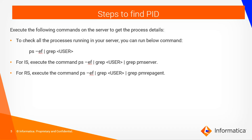These are the steps to find out the PID of any process. You can log into the Informatica server as the Informatica user, then run the ps -ef command to check what processes are running on the server. You can filter the search by using ps -ef grep user, so that it will show all the processes running under Informatica.